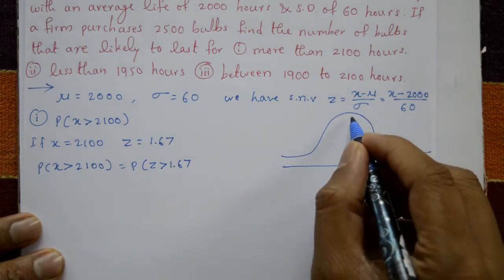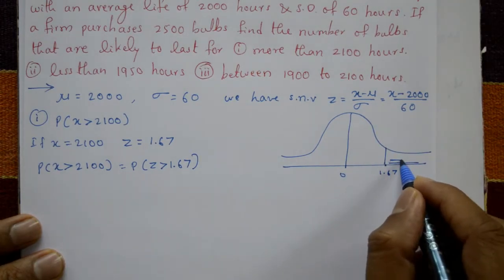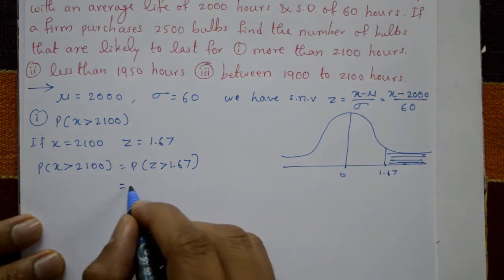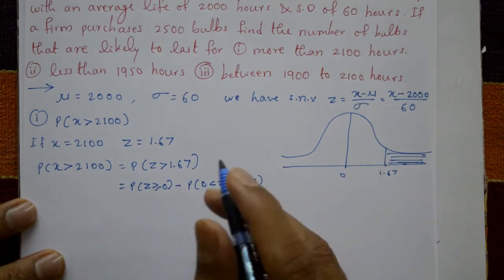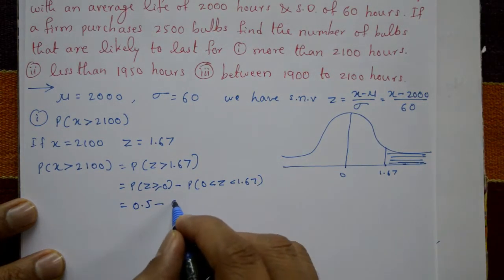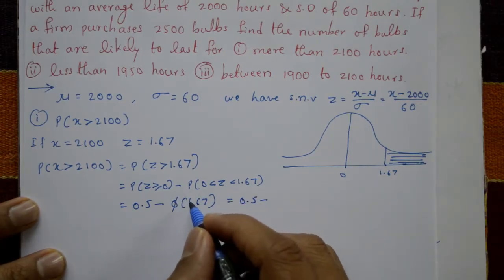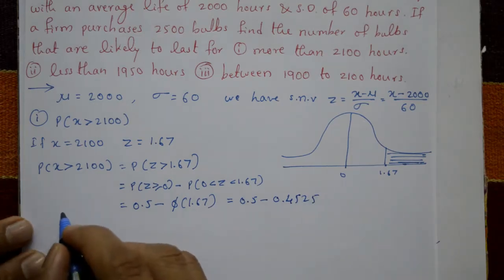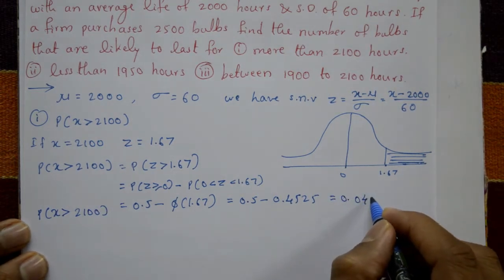The diagram shows z greater than 1.67, meaning the area to the right of 1.67. This equals 0.5 minus the area from 0 to 1.67, that is: P(z ≥ 0) - P(0 < z < 1.67) = 0.5 minus phi(1.67). Using the normal distribution table, phi(1.67) = 0.4525, so P(x > 2100) = 0.5 - 0.4525 = 0.0475.